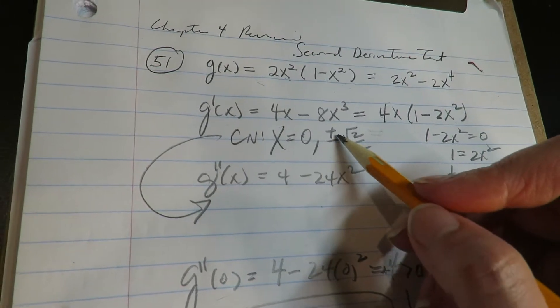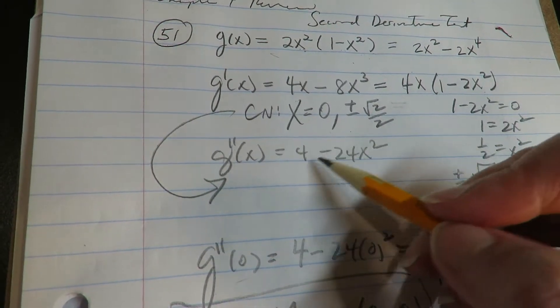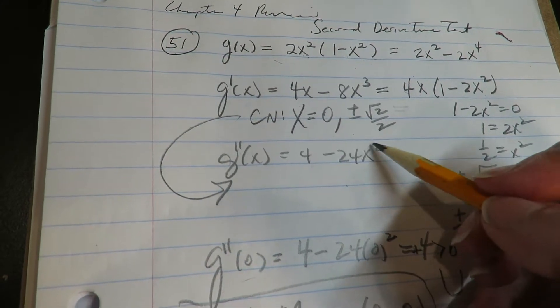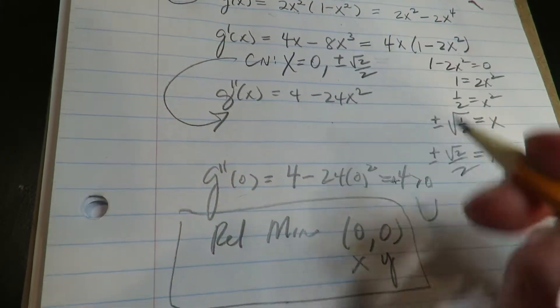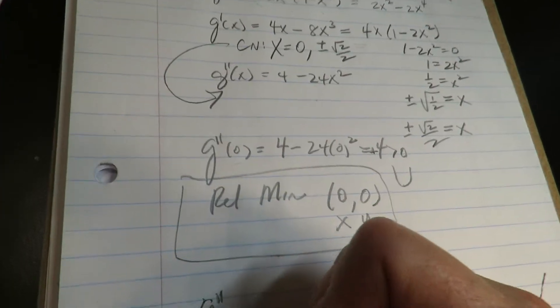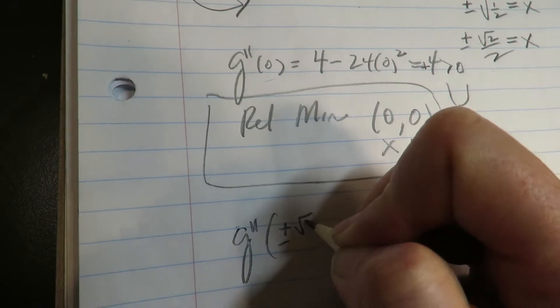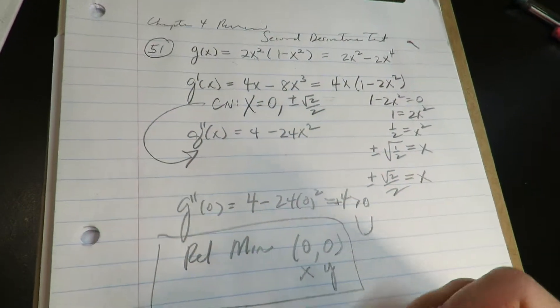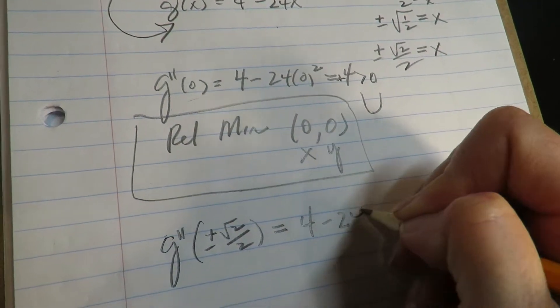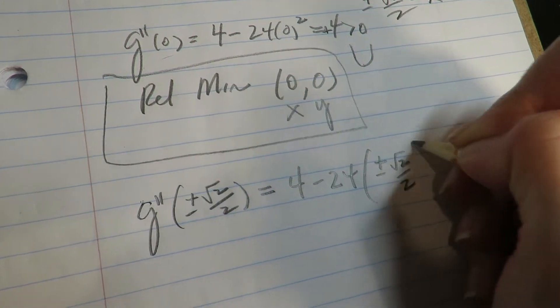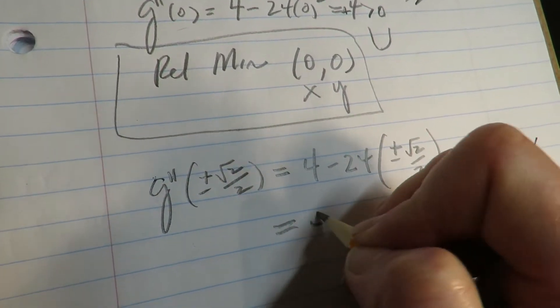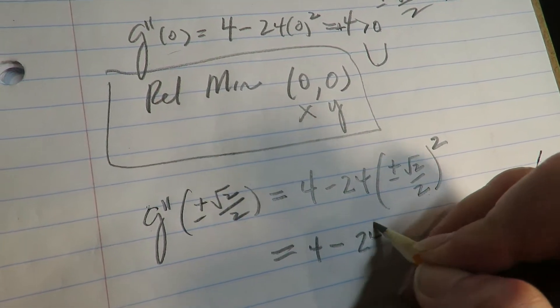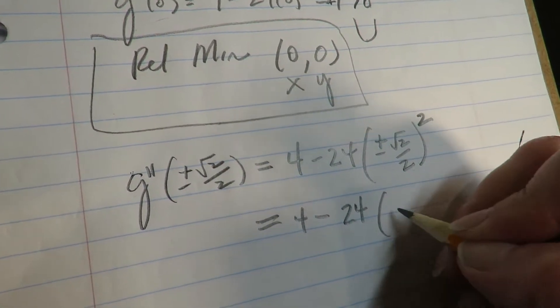All right, now because the plus or minus √2—this will give both, they'll both be positive or they'll both be negative because it's x² here. I can just do that one shot. They're both going to be the same. They're both either going to be maxes or mins, the way the equation looks.